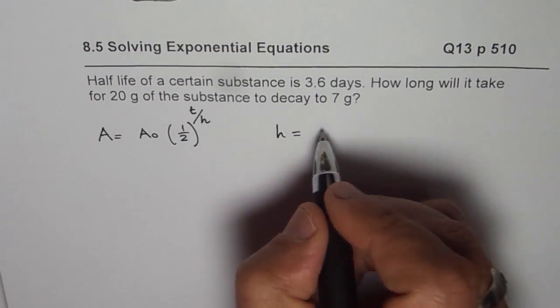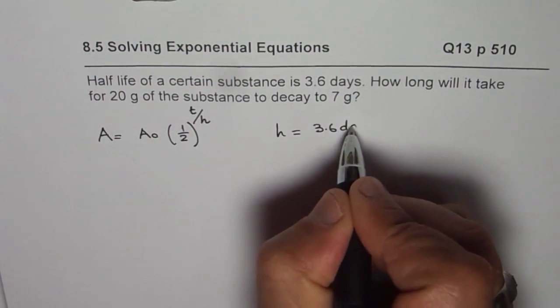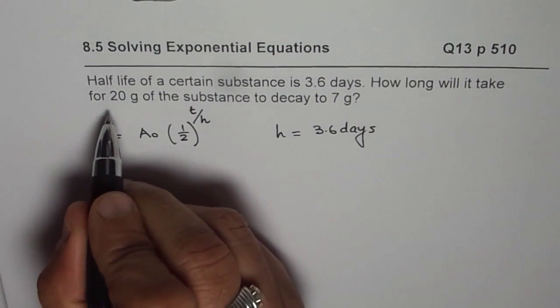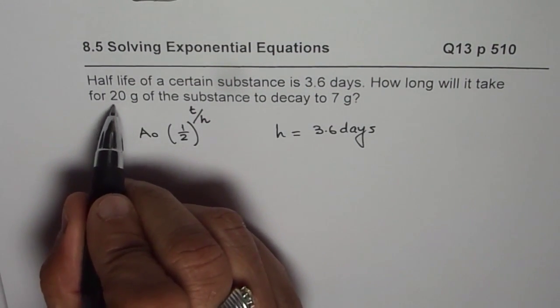we are given half life h as 3.6 days. And we know the initial amount is 20 grams.